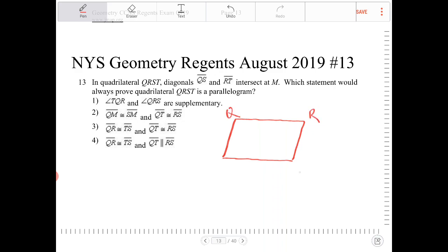So I'm going to draw this in a clockwise orientation, QRST, and here it says that QS and RT, which is a diagonal here, intersects at M.